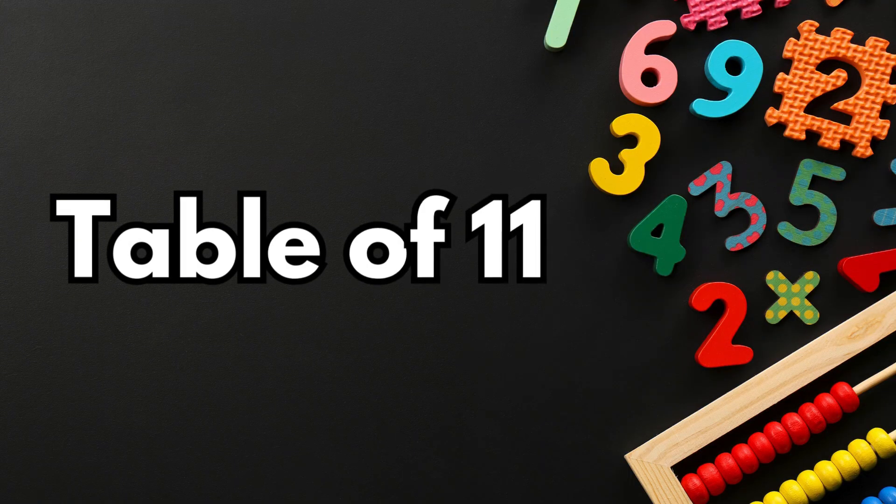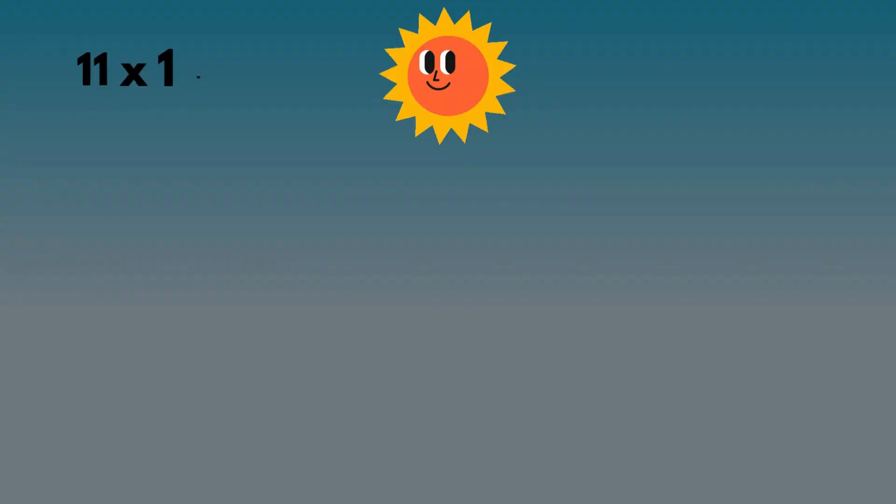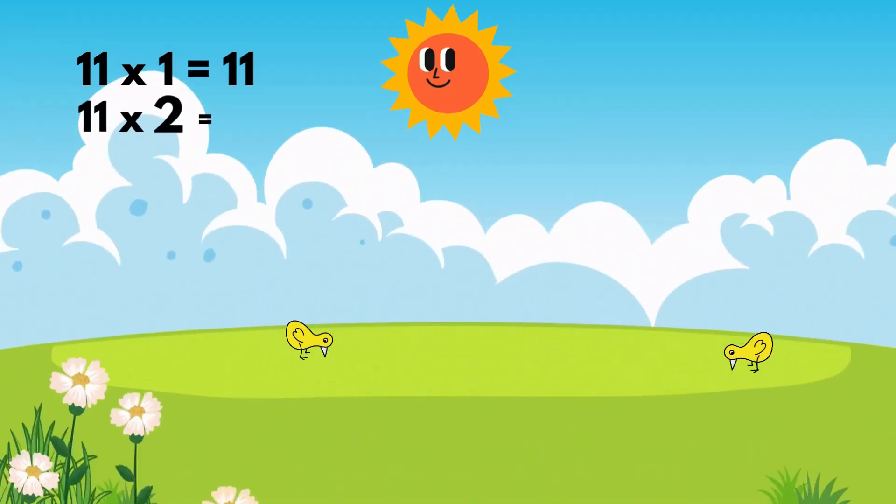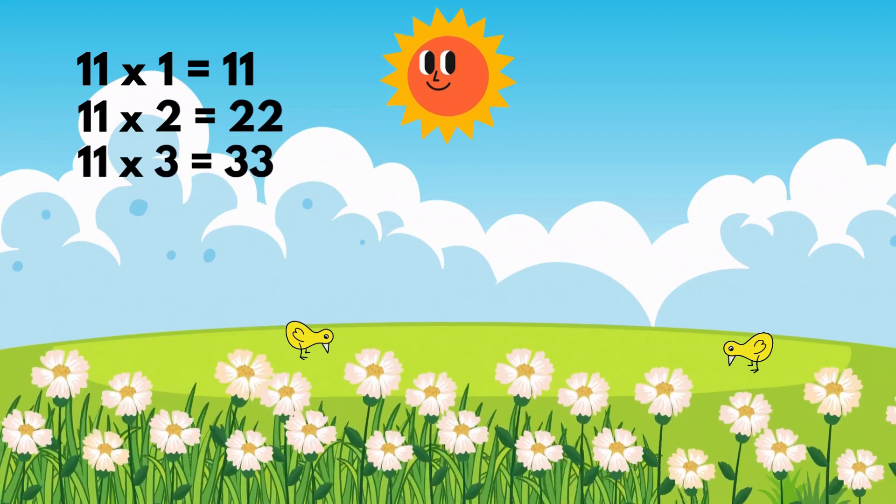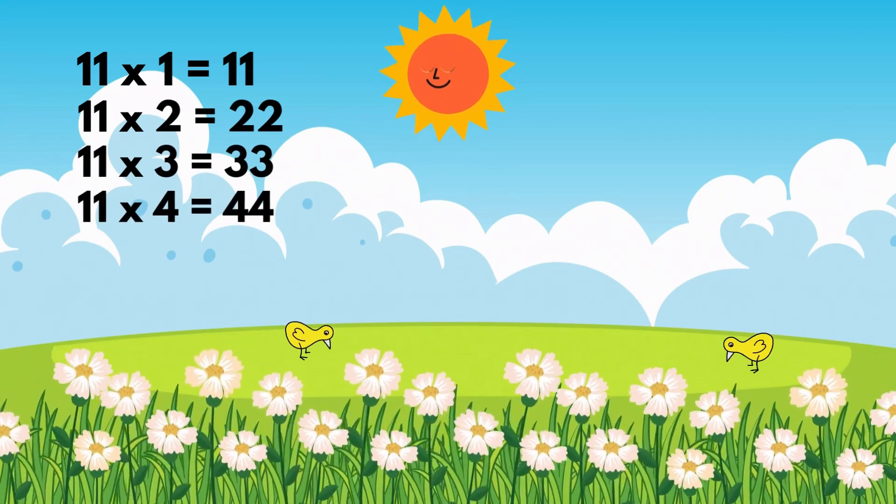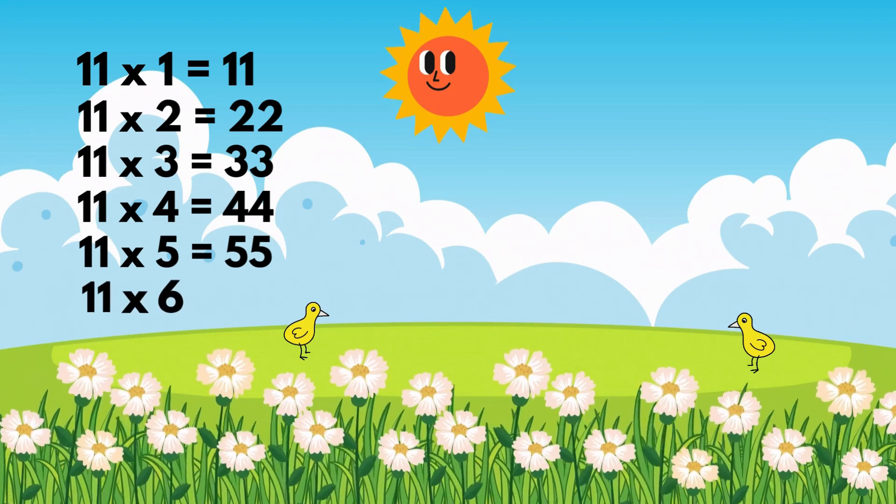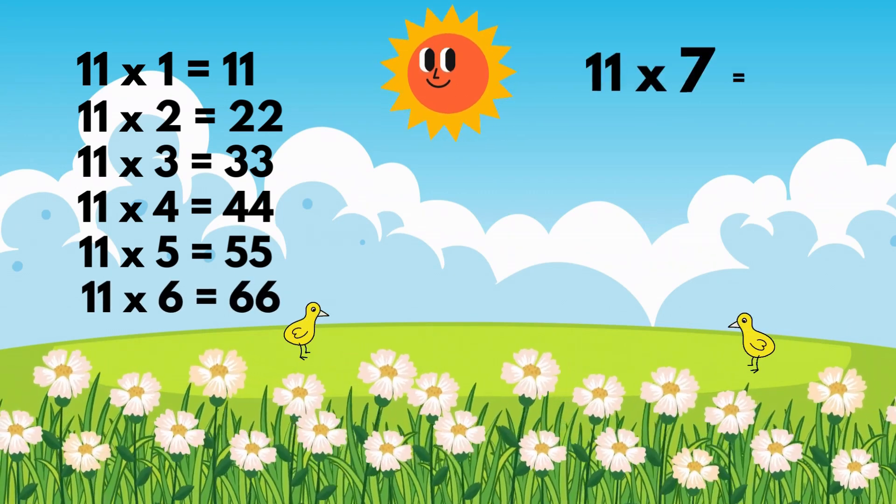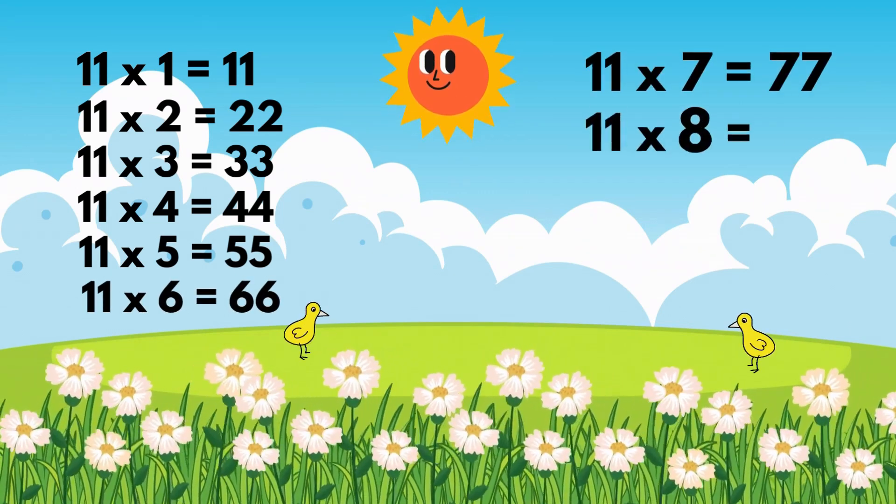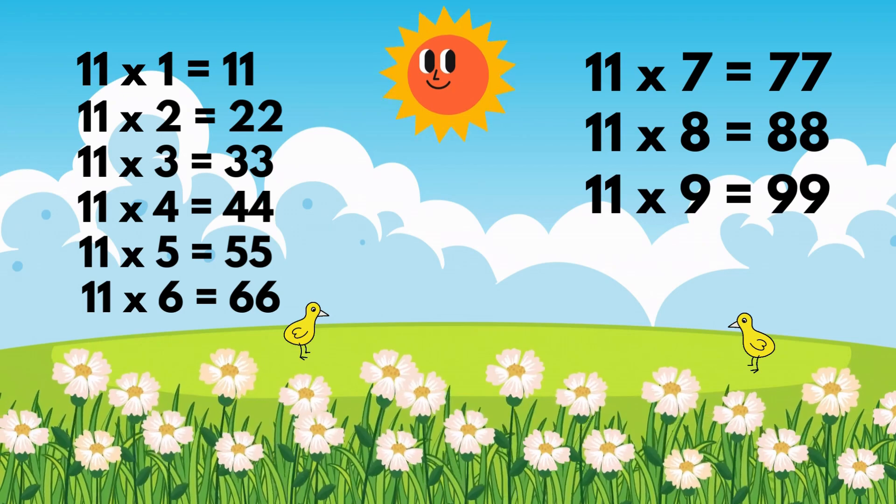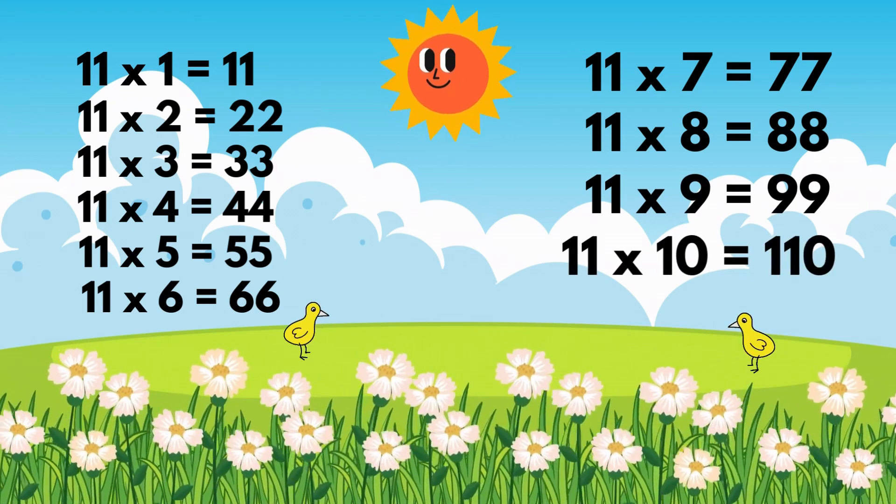Table of 11. 11 1's are 11, 11 2's are 22, 11 3's are 33, 11 4's are 44, 11 5's are 55, 11 6's are 66, 11 7's are 77, 11 8's are 88, 11 9's are 99, 11 10's are 110.